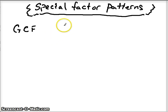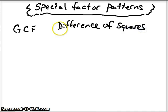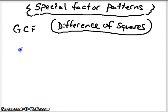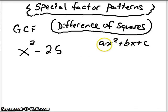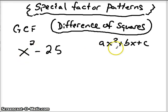The first one we're going to talk about is called a difference of squares. This name is quite descriptive of what we're going to see. For example, if we have x squared minus 25, notice that in our quadratic form there is no second term — there's just the ax squared and the c. That is one unique thing you can tell. If you only notice that there is an ax squared and a c, look to see if they are both perfect squares.